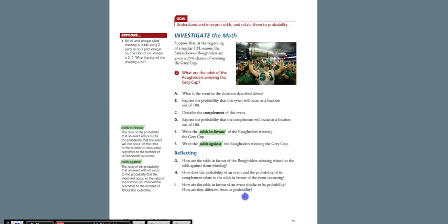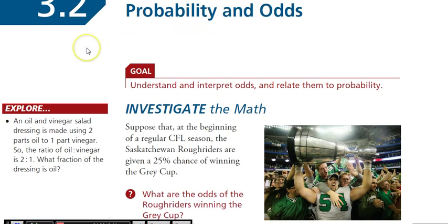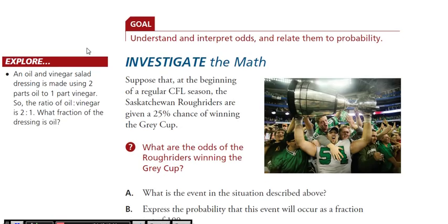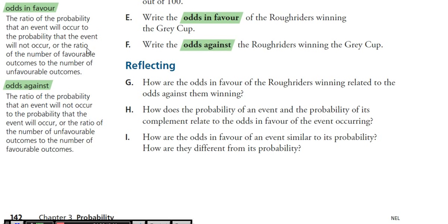Section 3.2: Odds. So there's probability, which we just discussed, and there are odds. An oil and vinegar salad is made using two parts oil to one part vinegar — so the ratio. Odds in favor: the ratio of the probability that an event will occur to the probability that it will not occur, or more likely, the ratio of the number of favorable outcomes to the number of unfavorable outcomes.